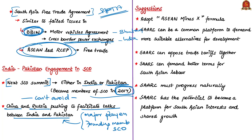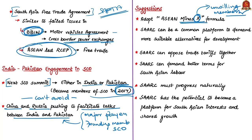Some suggestions to make SAARC still relevant: SAARC could adopt the ASEAN minus X formula, where members unwilling to join the consensus can be allowed to join at a future date, while members who wish to go ahead with connectivity, trade, technology, and cooperation agreements are not stopped from beginning earlier. Such a formula can also be introduced in SAARC so that it stays relevant.